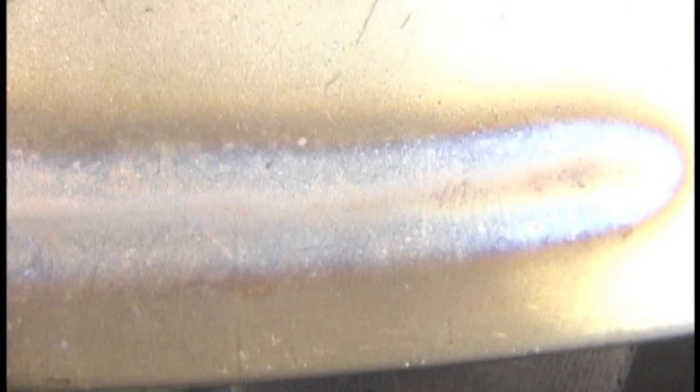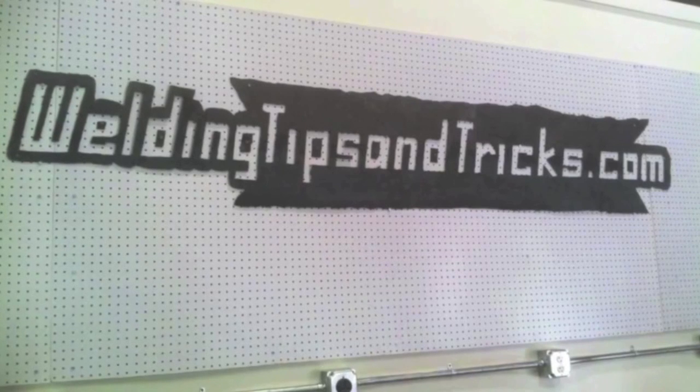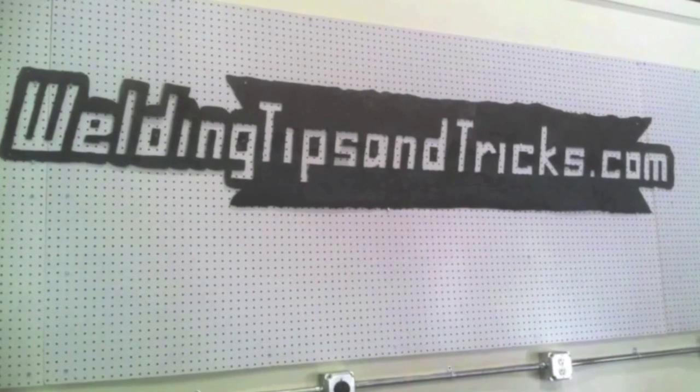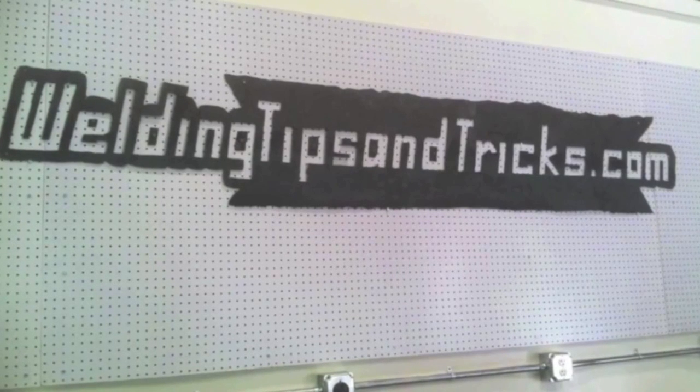And the rule of 33. I made up that rule: 33 across the board on your pulse settings. 33 pulses a second, 33% background, 33% on time is a really good place to start if you want to experiment with some high-speed pulse. And it'll let you weld really thin stuff without burning through. That's it for today. Thanks for watching. Visit WeldingTipsAndTricks.com.